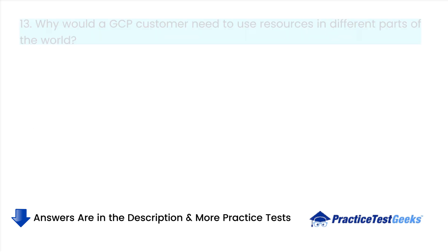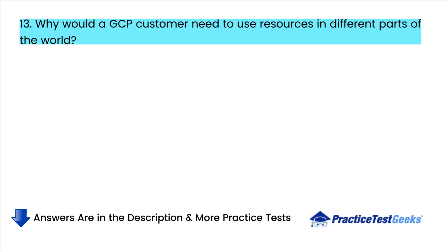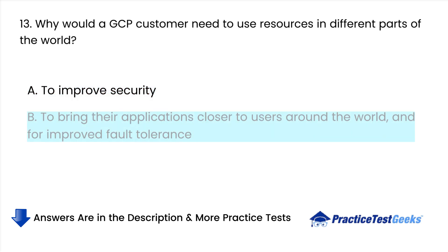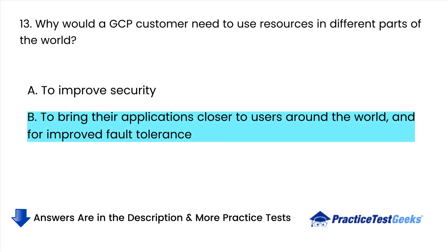Why would a GCP customer need to use resources in different parts of the world? A. To improve security. B. To bring their applications closer to users around the world and for improved fault tolerance.